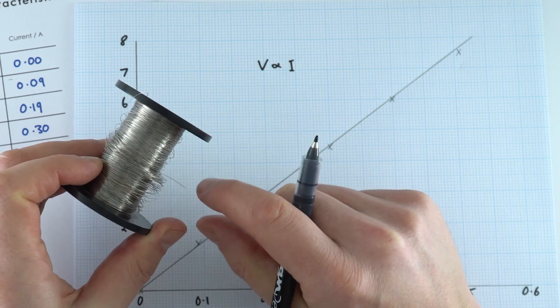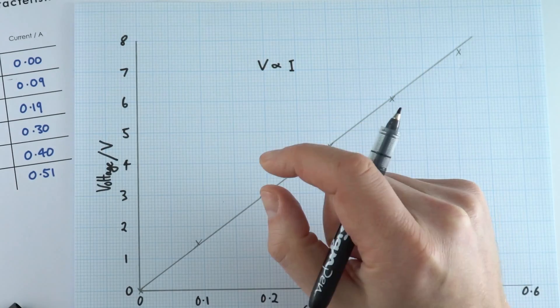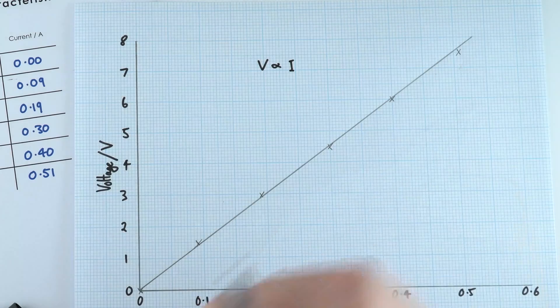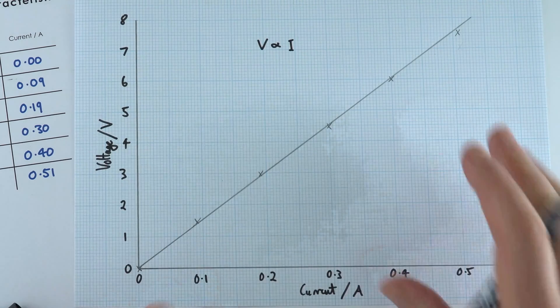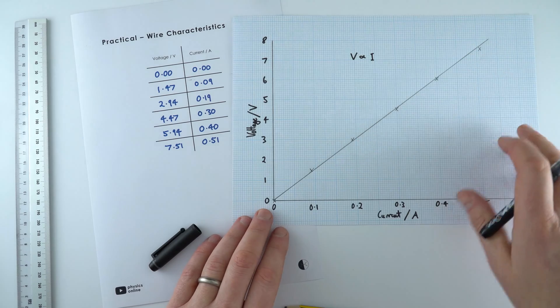And wire can be an ohmic conductor, provided the temperature is constant. And that's why I kept on turning the power pack off between the results. So this one over here, this is the characteristic for a wire.